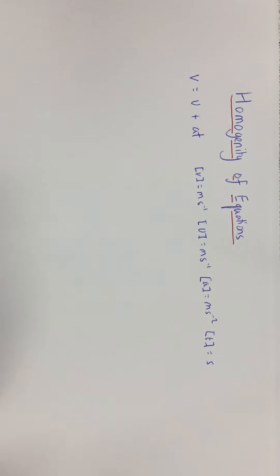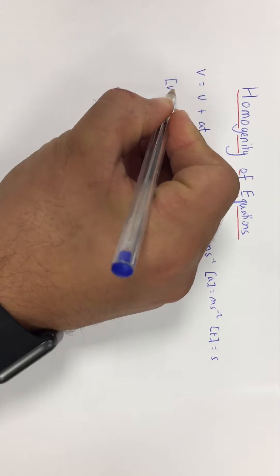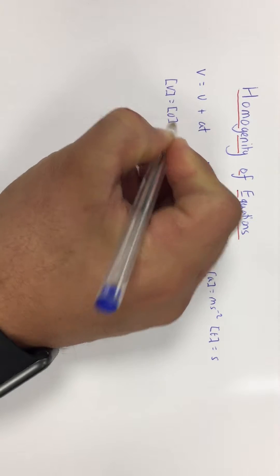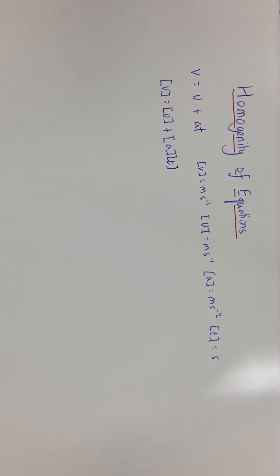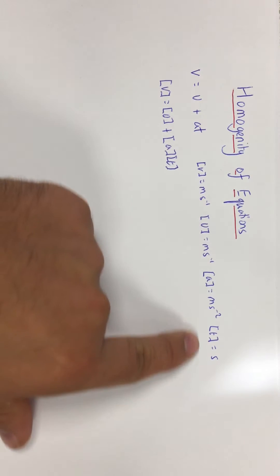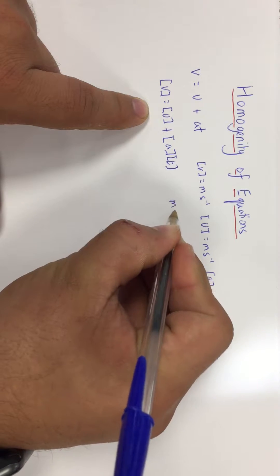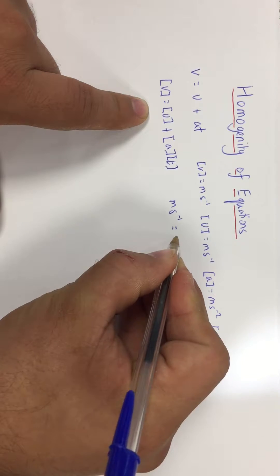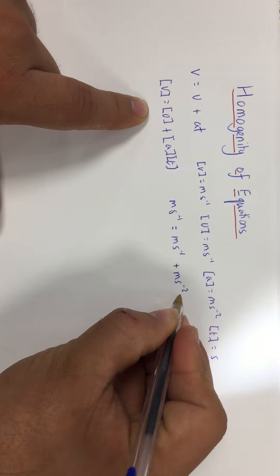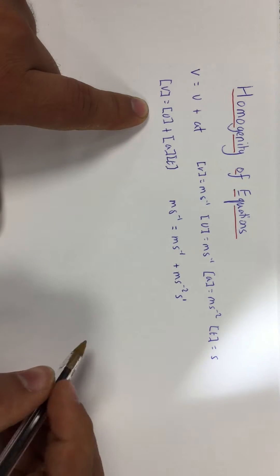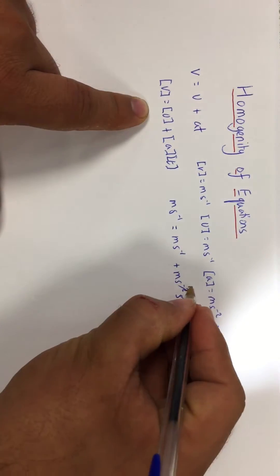Once we've done that, we think of the equation in terms of units: the units of v equal the units of u plus the units of a times the units of t. We substitute all of these units into the equation, so we have m s⁻¹ should equal m s⁻¹ plus m s⁻² times seconds. That seconds is seconds to the power of 1, so the s¹ cancels with s⁻², changing it to s⁻¹.